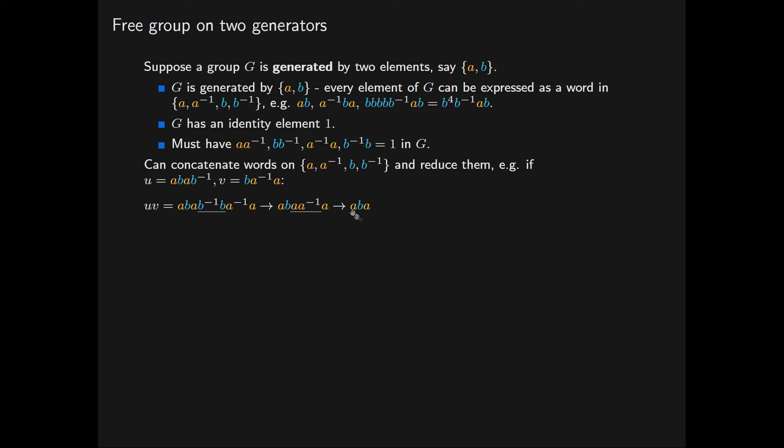The intuition here is that a reduced word does not contain any of these four expressions as subwords. Now it turns out that given any two words on these elements, this concatenation and reduction process always terminates and always gives us a unique reduced word, which we will denote by u star v. So this star is giving us a binary operation on the set of all words on these elements.